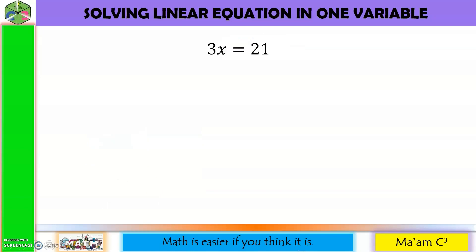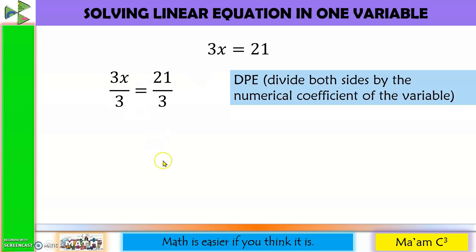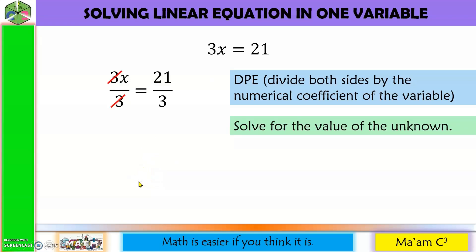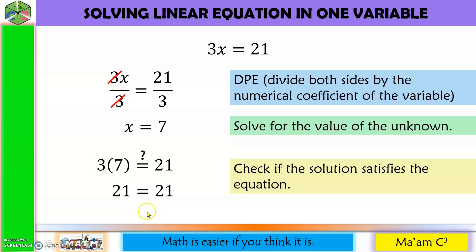Next example: what if we have 3x equals 21? We need to remove the numerical coefficient. We apply DPE — division property of equality — dividing both sides by 3. Then 3 and 3 cancel out, leaving x, and 21 divided by 3 equals 7. Checking: 3 times 7 equals 21. They are equal, so x equals 7 is correct.